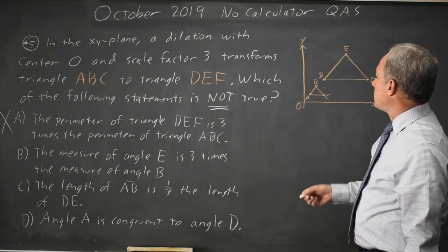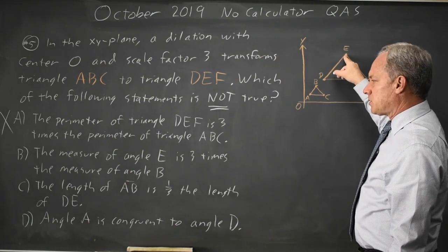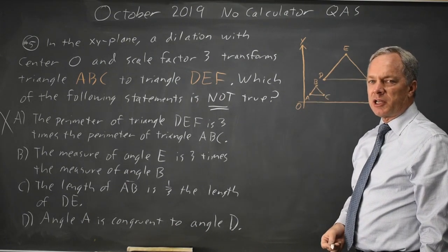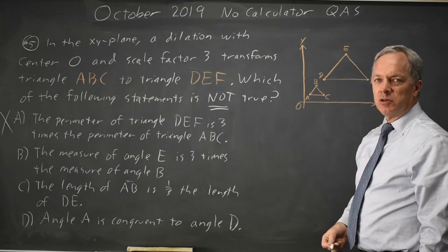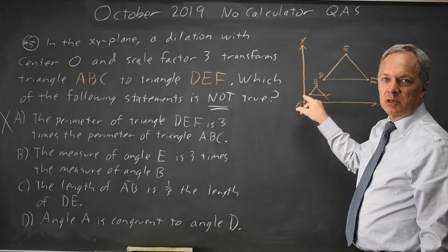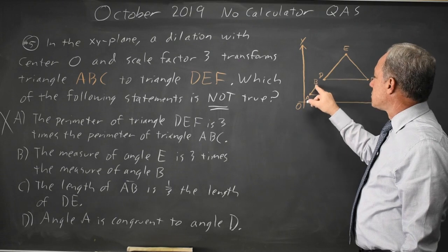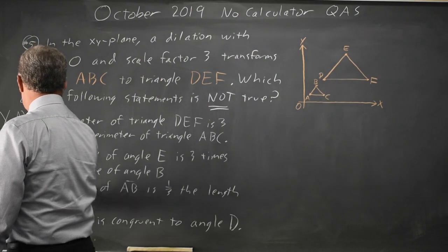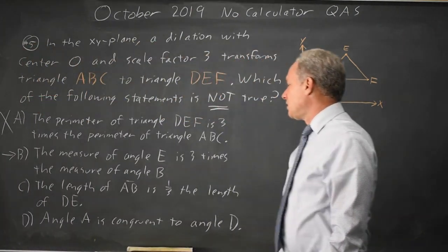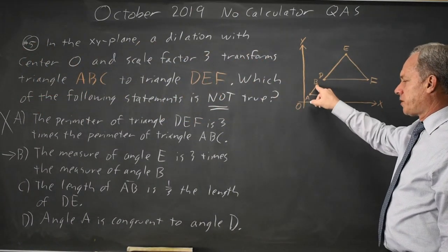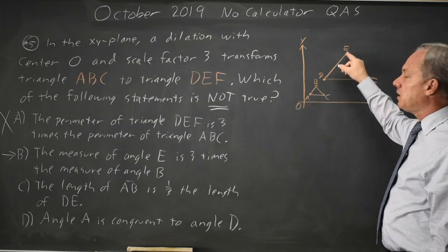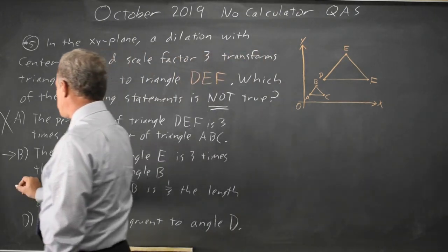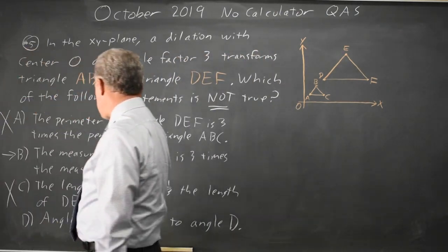Choice B: the measure of angle E is three times the measure of angle B. This is not true. These are similar triangles when you do a dilation with a constant scale factor, so angles B and E have the same measure. B is the correct answer. Choice C: the length of AB on the short triangle is one-third the length of DE, the corresponding side on the larger triangle — that is correct, but that is true, and they ask which is not true.